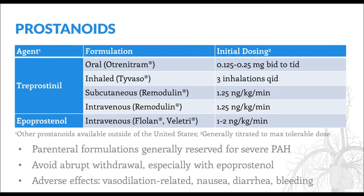The prostanoids include treprostinil and epoprostenol. Treprostinil is available as an oral, inhaled, subcutaneous, or intravenous formulation, whereas epoprostenol is available only as an intravenous formulation. To date, IV epoprostenol is the only drug shown to improve survival in PAH. Both drugs are associated with improvements in symptoms and disease state progression. Despite the potential benefits associated with continuous infusions of epoprostenol or treprostinil, their use is generally reserved for severe PAH. Regardless of formulation, the drugs are generally started at low doses and titrated to the dose that can be maximally tolerated. Most of their adverse effects are vasodilation-related, such as flushing, although GI complaints and bleeding are also commonly reported. Abrupt withdrawal, especially of the intravenous formulations, should be avoided as patients may decompensate rapidly. This is particularly true with epoprostenol given its half-life of only 6 minutes.